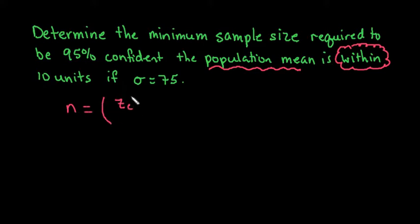The zc, or critical value, could also be z-star in some textbooks. Some textbooks don't even give you this formula—they just require you to use the margin of error formula and solve for sample size yourself. This formula has already solved for sample size, so we just plug in the values.